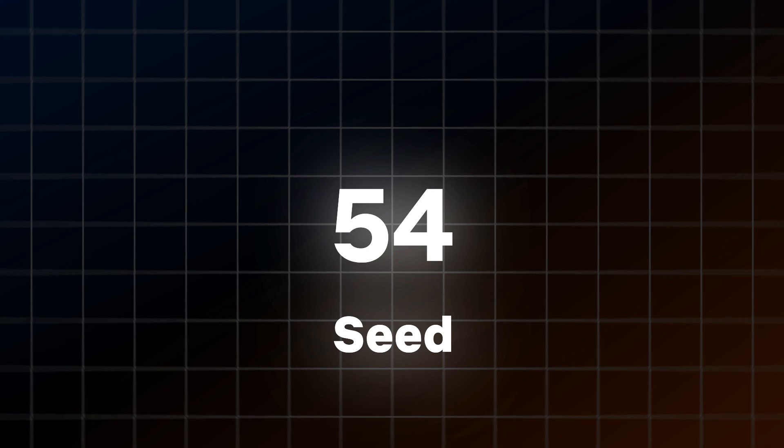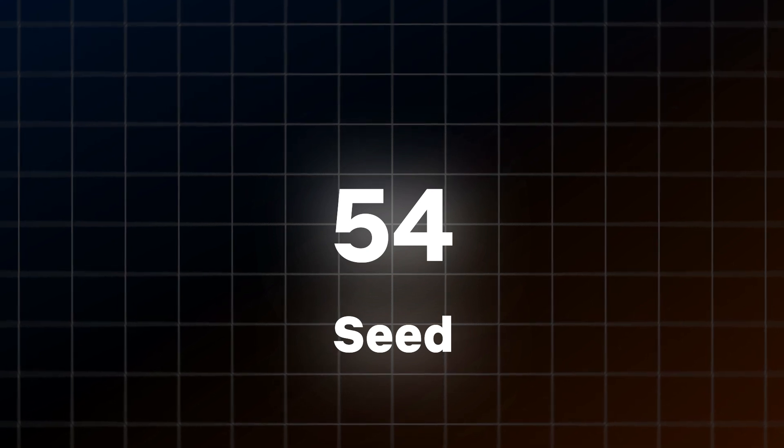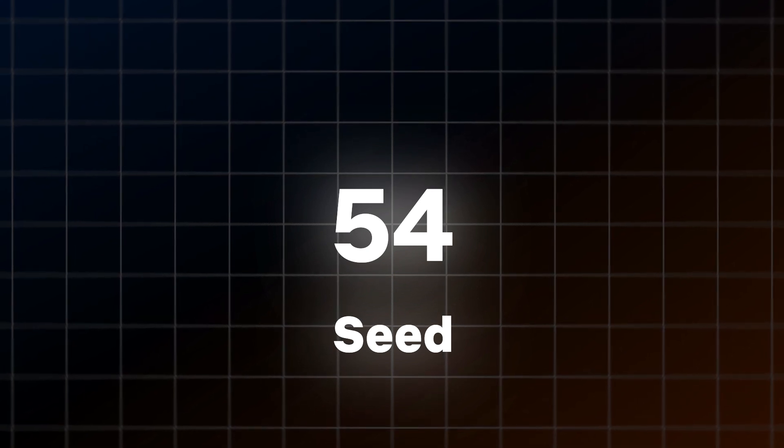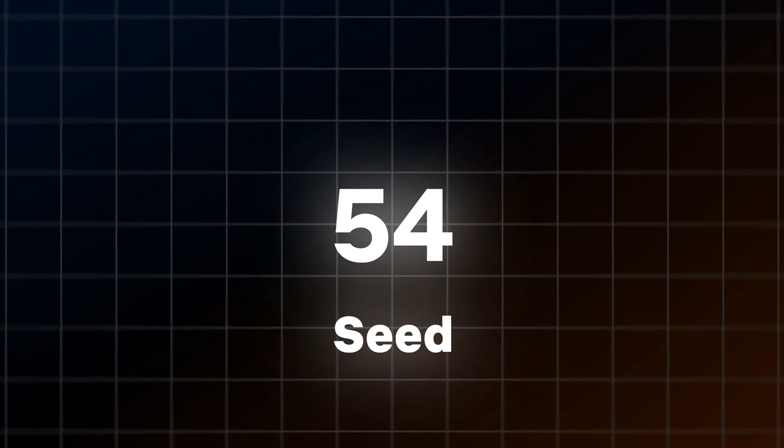Here is an example of how one of those generators works. First, pick any starting number called a seed — it can be the current time in milliseconds or the temperature outside. After that, multiply the seed by itself and take the middle digits out of the result. Keep repeating the process to get more numbers. That's the middle square method.